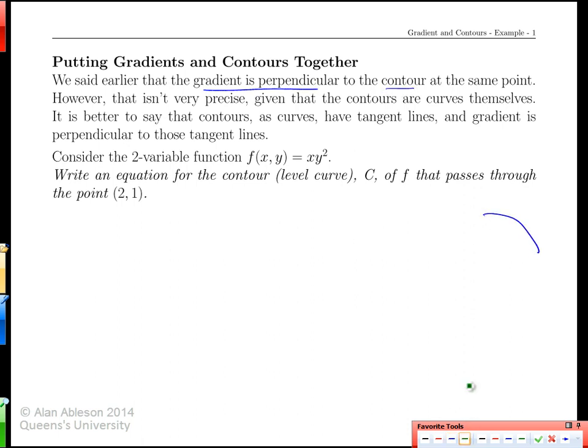But what that means when we have a curved contour - well, you can't be perpendicular to a curve. So what we actually mean is perpendicular to a tangent line to that curve. Then we can talk about two straight lines that actually are perpendicular one to the other.